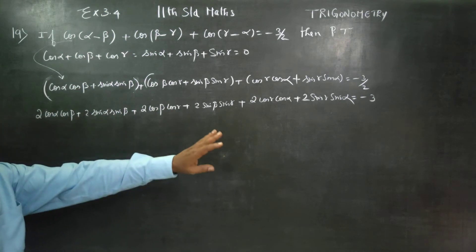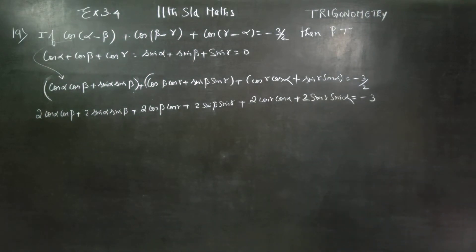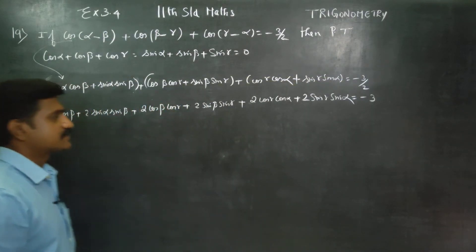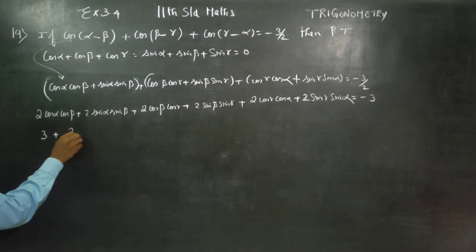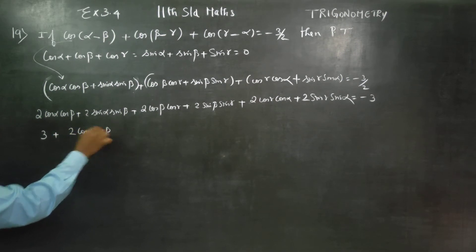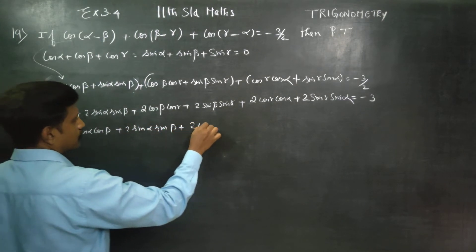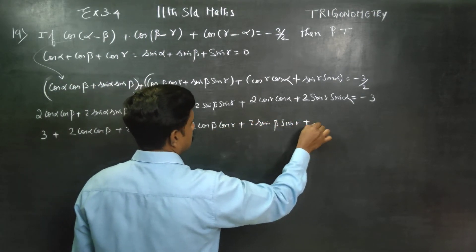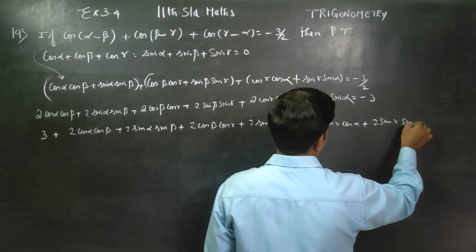Now, this side is equal to minus 3. Shifting minus 3 to the other side gives plus 3. So we get plus 3 plus 2 cos alpha cos beta plus 2 sin alpha sin beta, plus 2 cos beta cos gamma plus 2 sin beta sin gamma, plus 2 cos gamma cos alpha plus 2 sin gamma sin alpha, equal to 0.